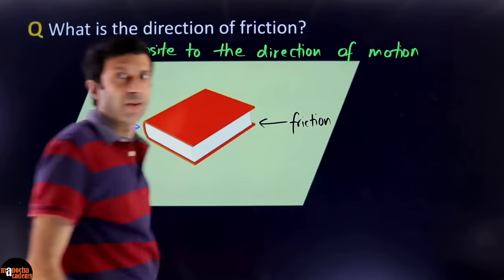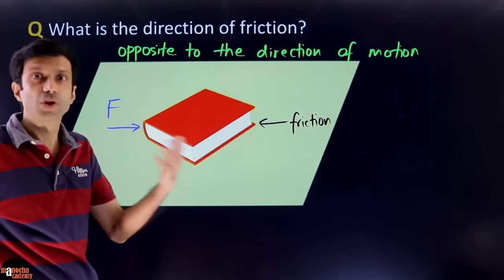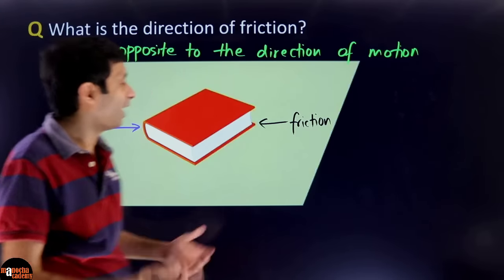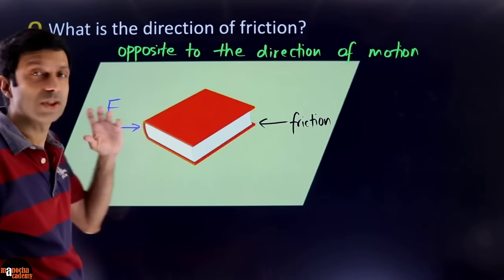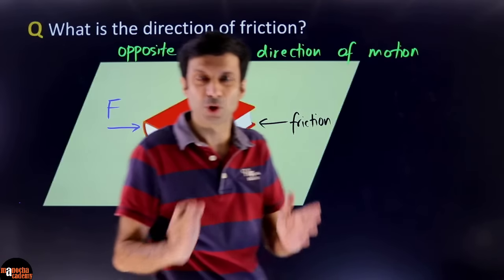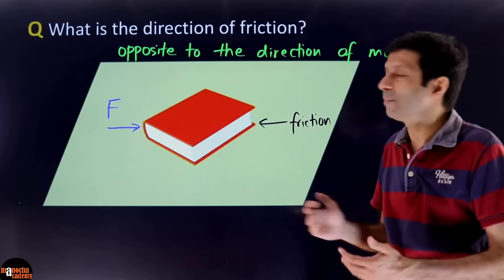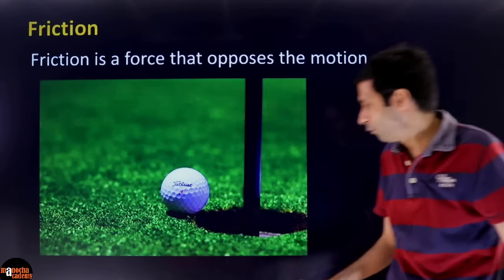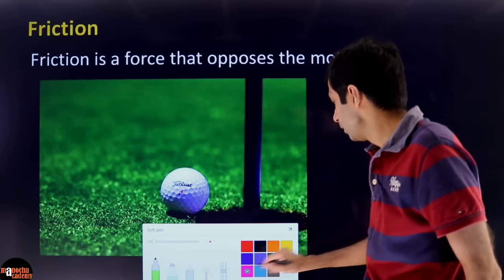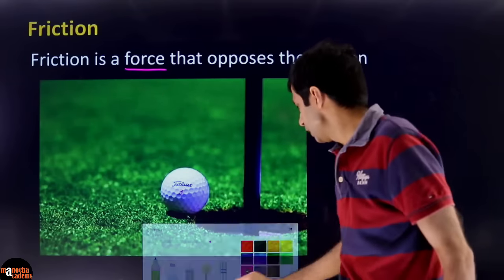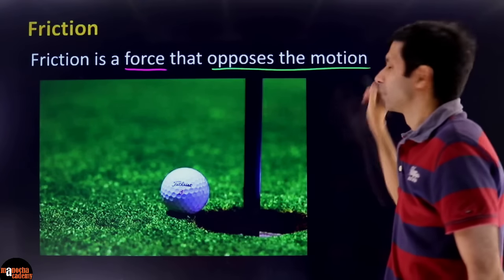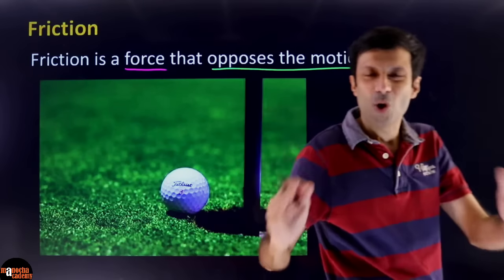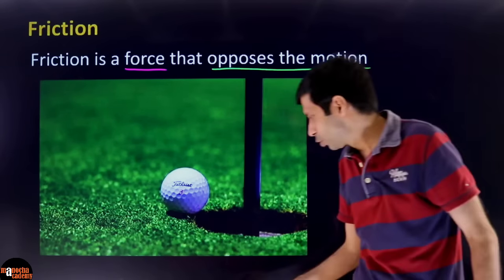Let's write that down: friction acts opposite to the direction of motion. Sometimes if there is no motion, it opposes the force. But if there is motion, friction opposes it. So friction is a force that opposes the motion. Will friction ever help the motion? No — friction is like the opposition party, it is always opposing the motion. In the golf example, the ball's motion is toward the hole, and friction acts in the opposite direction — that's why the golfer feels sad.